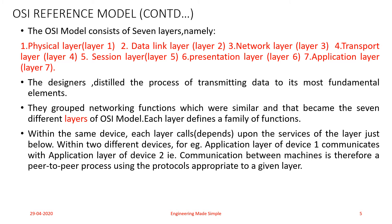Within the same device, each layer calls upon the services of the layer just below it. Within two different devices — for example, the Application layer of Device 1 communicates with the Application layer of Device 2 — communication between machines is peer-to-peer using the protocols appropriate to a given layer. Within the same device, data encapsulation takes place, and between two different devices, data transmission takes place using intermediate nodes and peer-to-peer protocols.